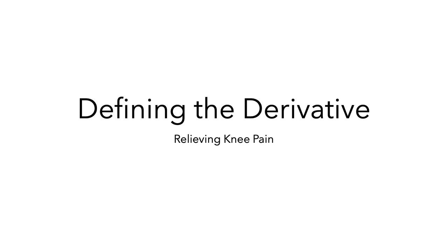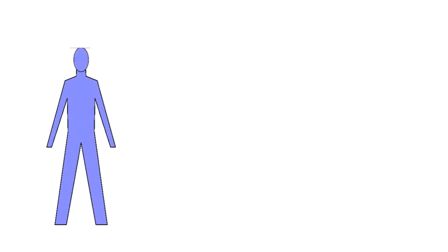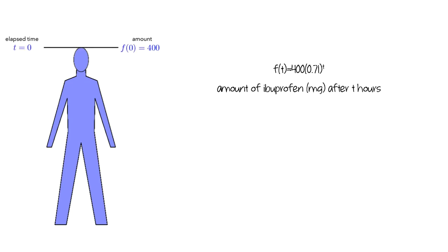In this video, we will formulate the definition of the derivative of a function by talking about relieving knee pain. Let's think about the scenario where a person takes 400mg of ibuprofen. In this case, the function f equals 400 times 0.71 to the t represents the amount of ibuprofen in the body in milligrams in terms of the number of hours elapsed since taking the 400mg dose.